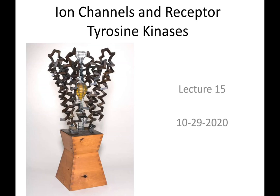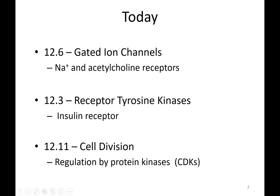This is lecture 15. We'll be going through a couple of other signaling pathways, in particular those involving ion channels and receptor tyrosine kinases. Chapter 12.6 covers ion channels and 12.3 covers receptor tyrosine kinases. We'll look at the insulin receptor as our specific example of that. We'll also talk about cell division and its regulation by protein kinases, specifically CDKs. The specific examples of ion channels we'll discuss are the sodium ion channel and the acetylcholine ion channel — both of those are gated.